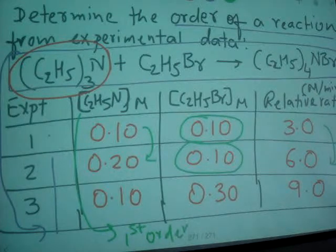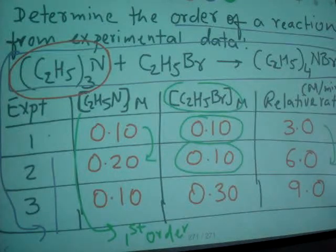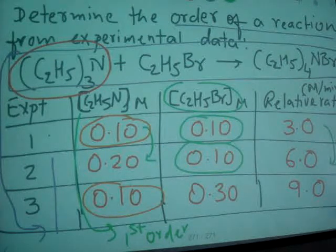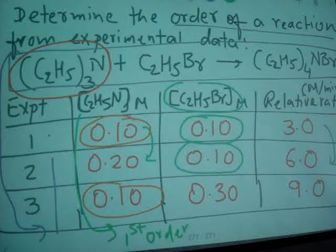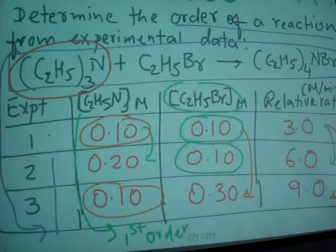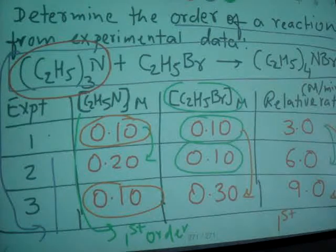Now let's look at the other reactant. When you look at the other reactant, experiment 1 and 3, concentration of other reactant is constant, but when you look at it, 0.1 to 0.3, if concentration of this reactant is 3 times, then the relative rate is also what? 3 times. So that's where we get, it's also in first order.